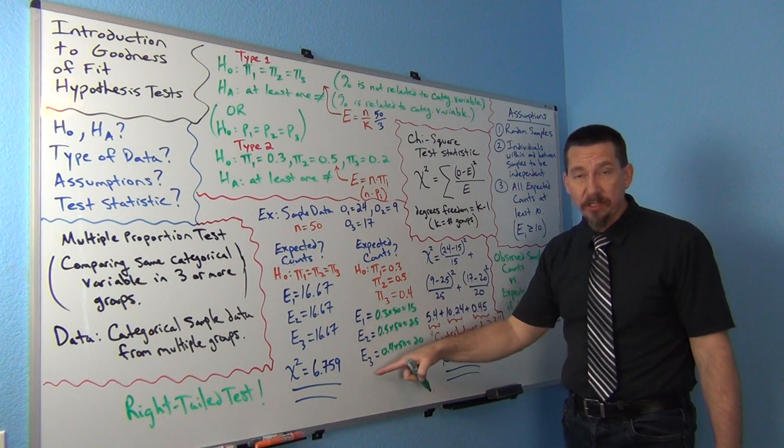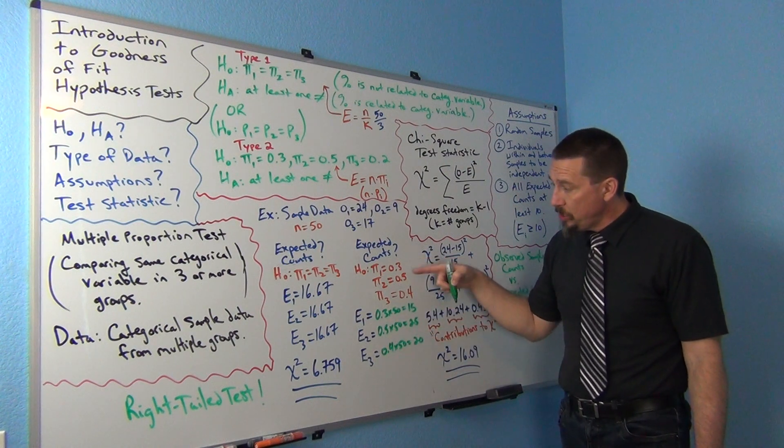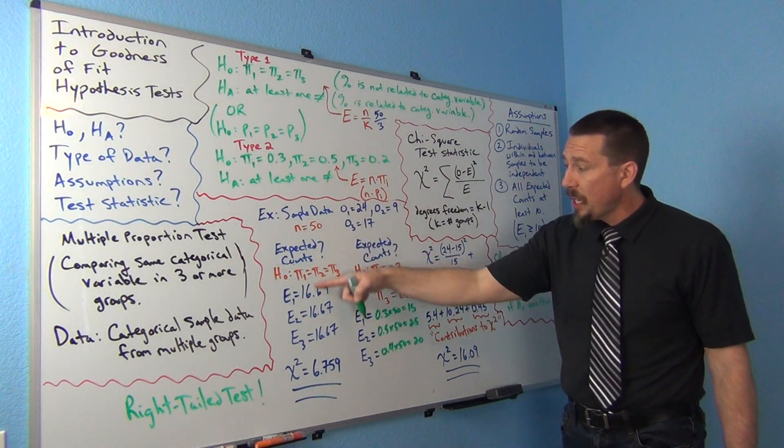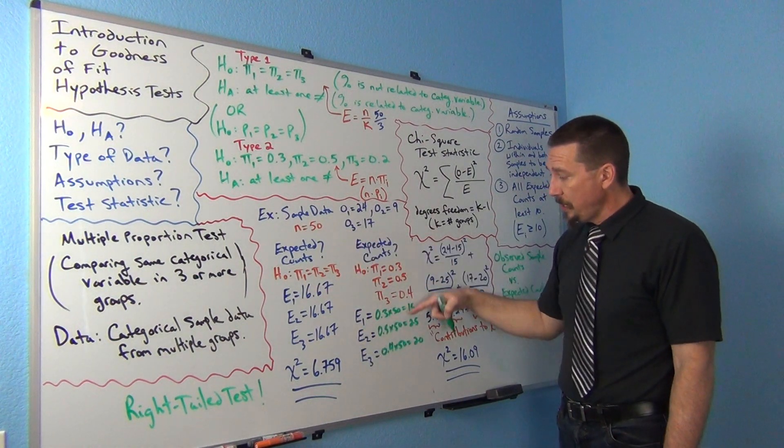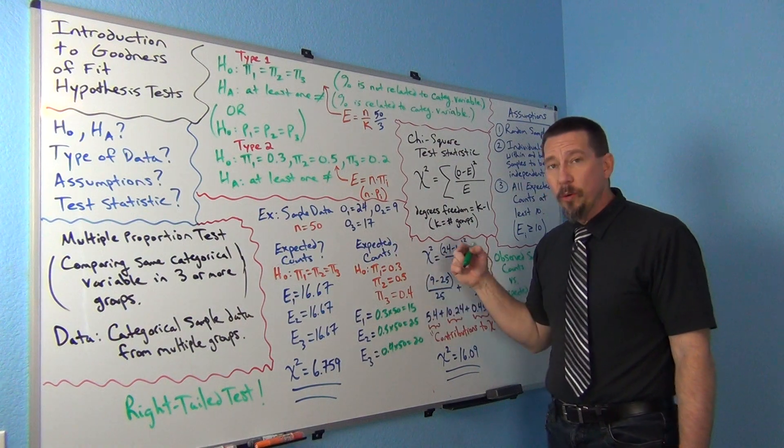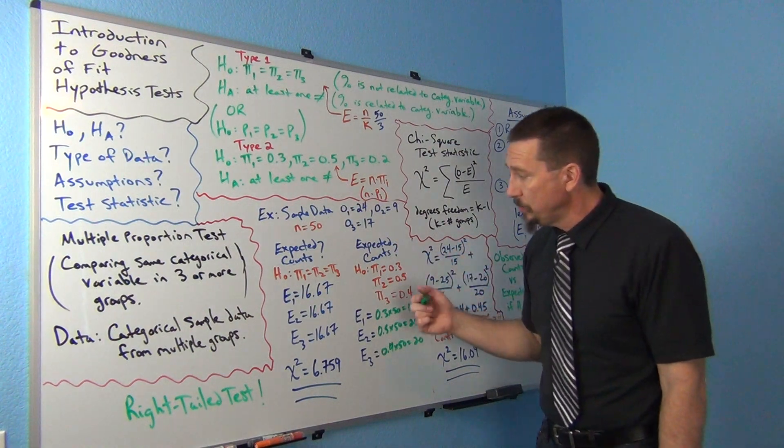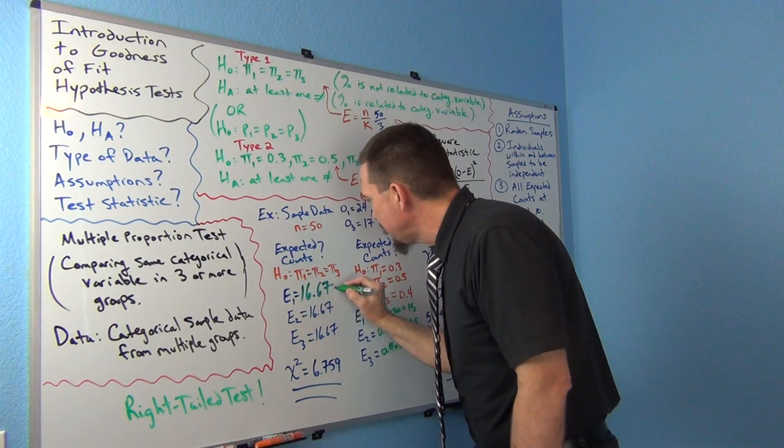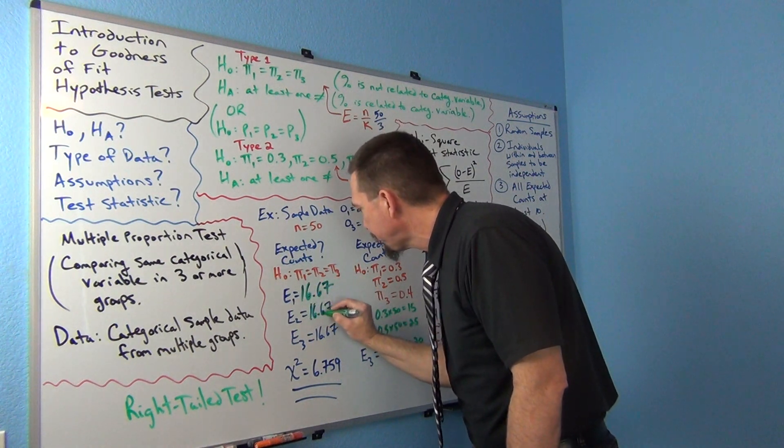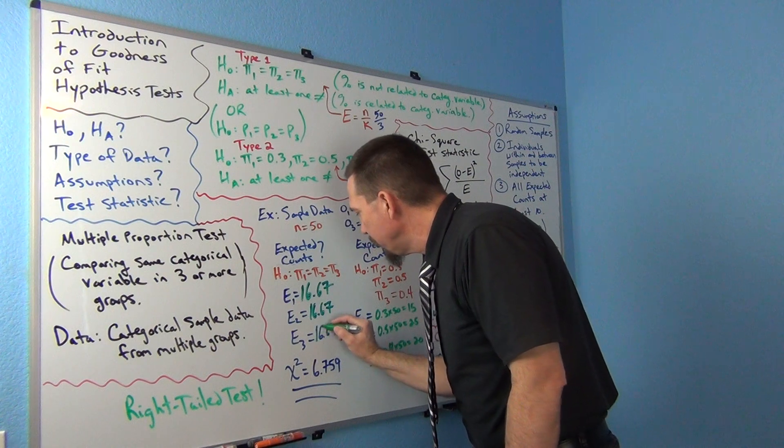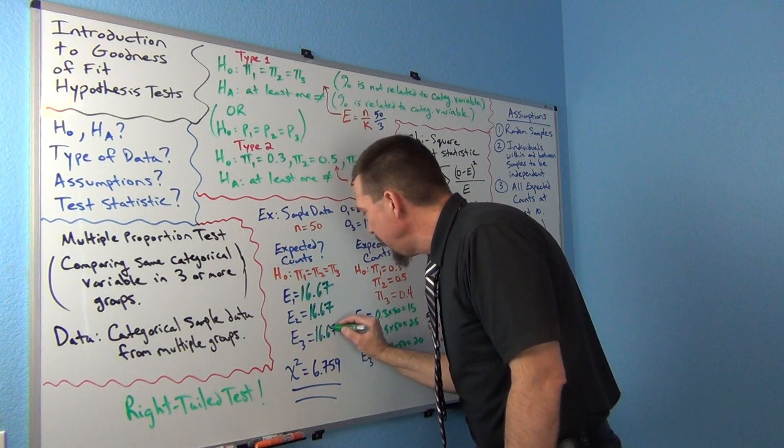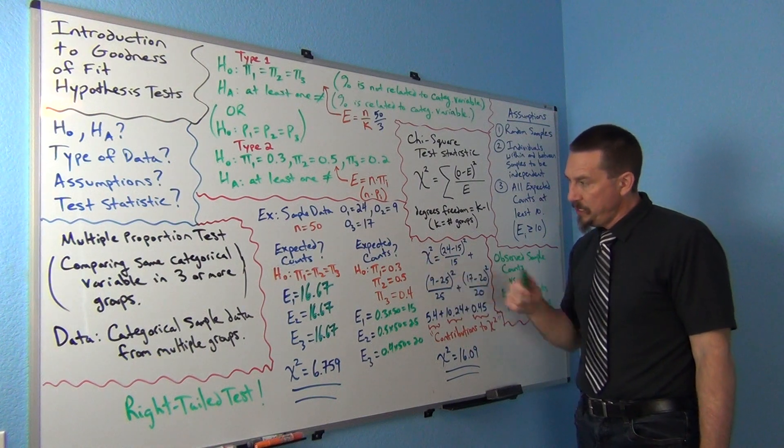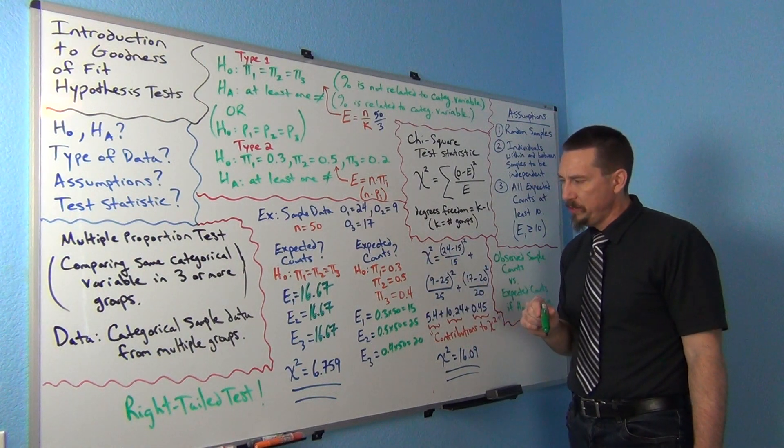Notice again the expected counts did not come out equal because my proportions that I'm assuming in the null hypothesis are not equal. So this is type 1 and this is type 2, and you can see how we're getting different expected counts. All of these expected counts came out to 16.67, which was really just dividing 50 into three equal groups. Now I'm taking into account these specific percentages that are listed in the null hypothesis.